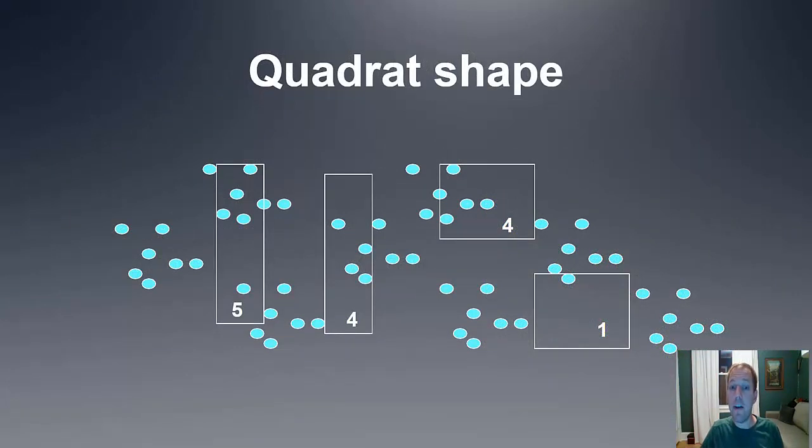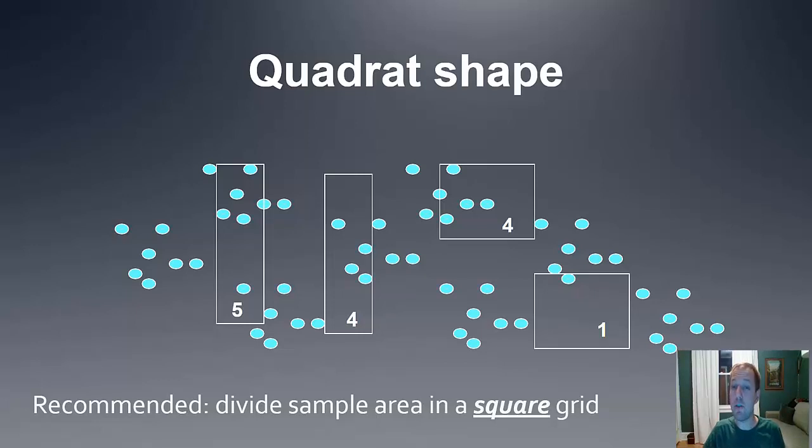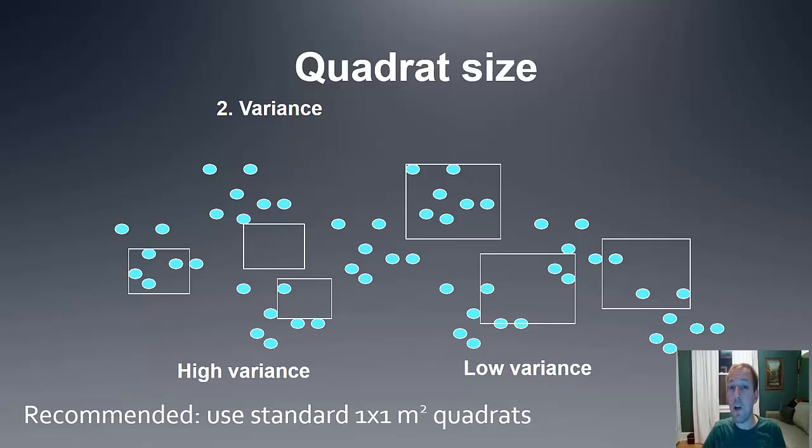Quadrats can vary in terms of shape. They should be rectangular solids, but my recommendation is that you divide your sample area into a square grid. Quadrats can also vary in size. The size of particular quadrats is actually a bit of a trade-off. If you have smaller quadrats, it could be that there's a lot more variance, some quadrats with no individuals and other quadrats with more. Having large quadrats gives you a lower variance. Based on the size of our field and the types of things that you're going to be counting, I recommend using a standard 1x1 meter squared quadrat, which is easy to assemble using meter sticks.